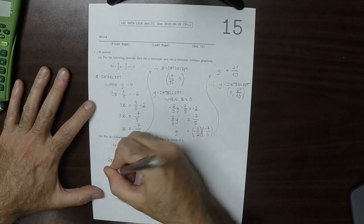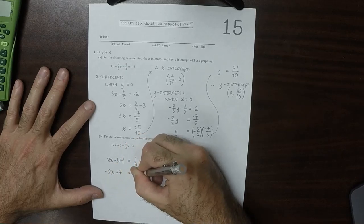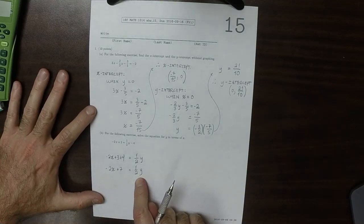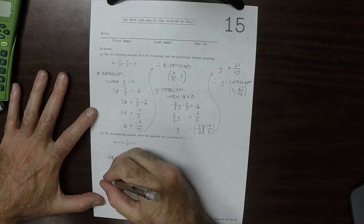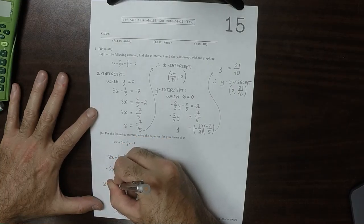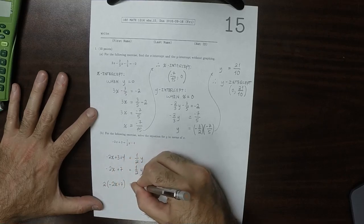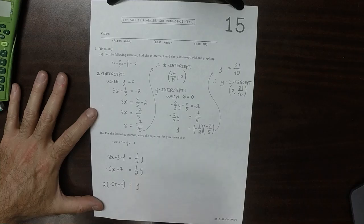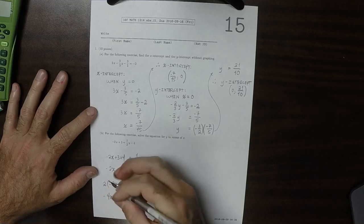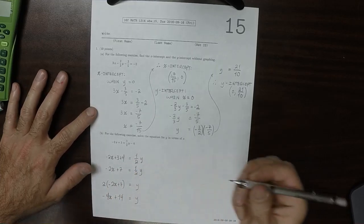So negative 2x plus 7 is half y, and then I want to have y all by itself with a coefficient of 1. So I'll multiply everything by 2. Negative 2x plus 7 is y, because half times 2 is 1. And I'll distribute that 2 in. Negative 4x plus 14 is y.